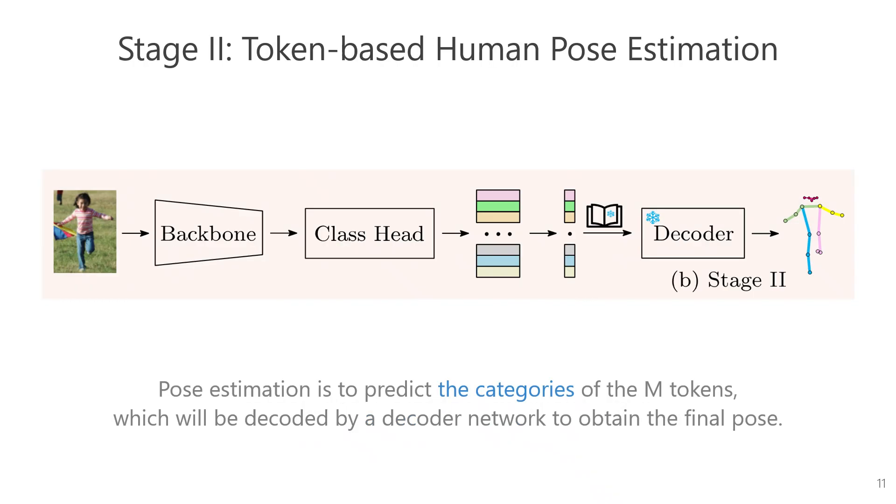Once the pose is represented as tokens, the subsequent pose estimation task is simplified to training a classification network using cross entropy loss to predict the categories of the M tokens corresponding to the pose in an input image. Upon obtaining the predicted tokens, the final pose can be obtained by leveraging the frozen, well-trained codebook and decoder.